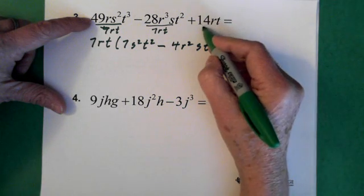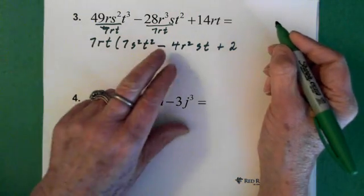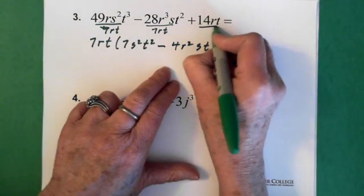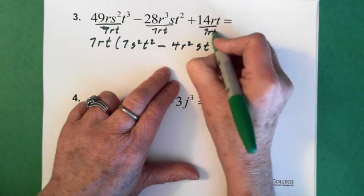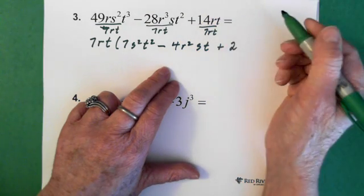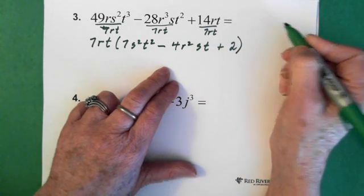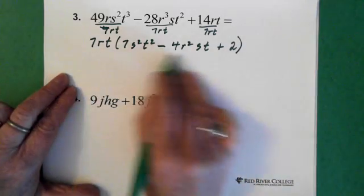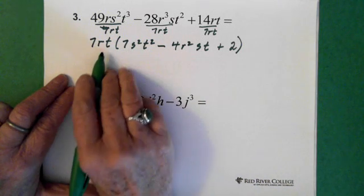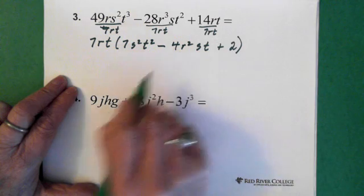And then the last one. We divide by 7. We get a 2. We divide by R, let's just write it down here, 7RT. We divide by the R. We're left with a 1. T divided by T is 1. So then we just have a 2 here. And then this is what your final answer would be. We pull out the 7RT and we're left with these pieces.